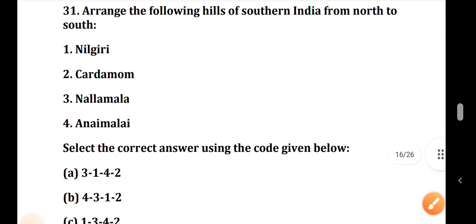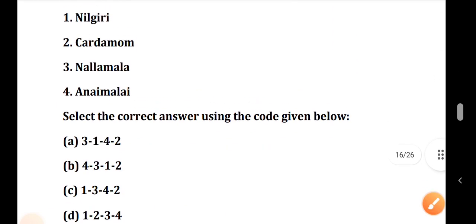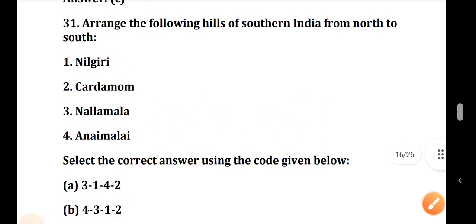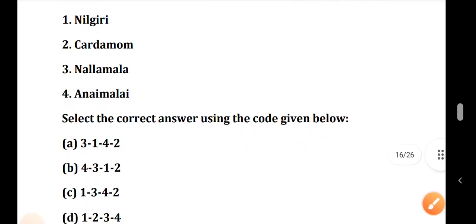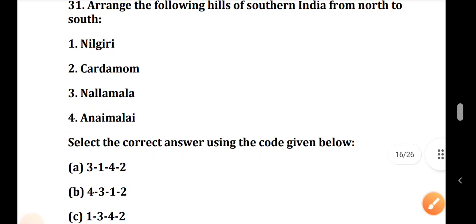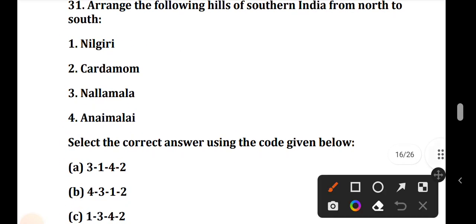Question number 31: Arrange the following hills of southern India from north to south. The correct answer is Option A: 3, 1, 4, 2. Nalamala is the extreme north.